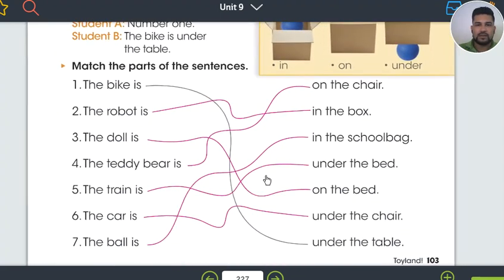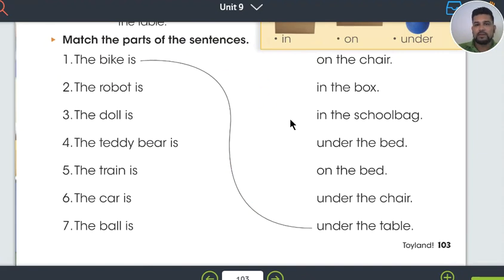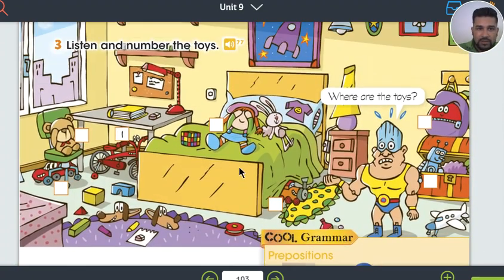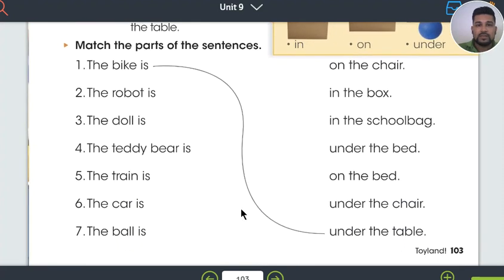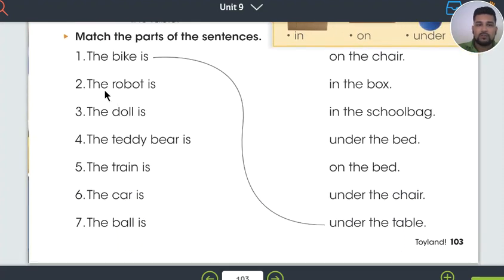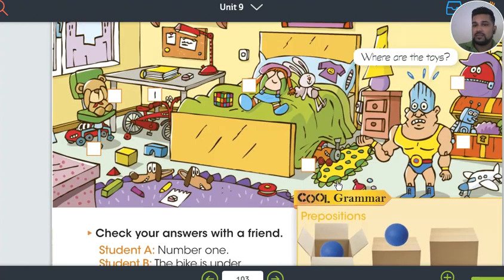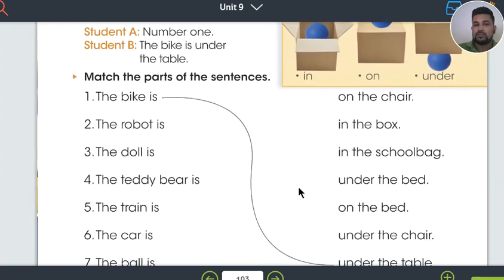Posteriormente, vamos a revisar esta actividad. Primero mostramos las respuestas rapidito. Y ahora vamos a resolver la actividad. Siempre con el mismo listening. So, the bike is under the table. Let's see if it's right. Veamos la figura. Where is the bike? The bike is under the table. Pueden hacer esta actividad con el mismo audio. The robot is, where is the robot? Maybe it's in the box. Yes, the robot is in the box, which is number 2.